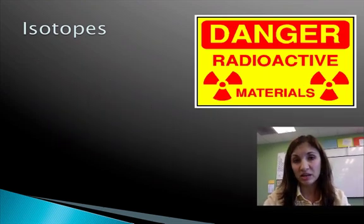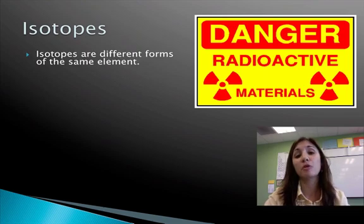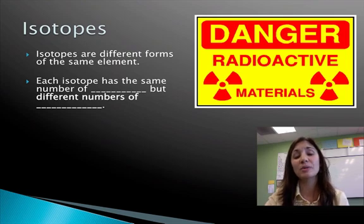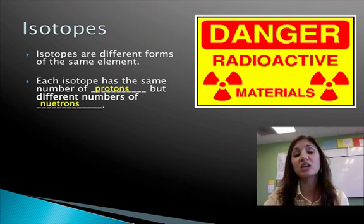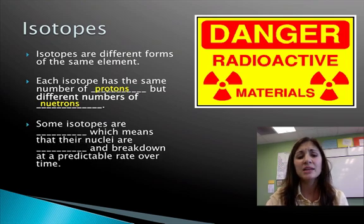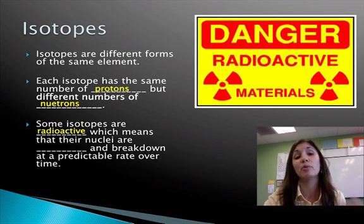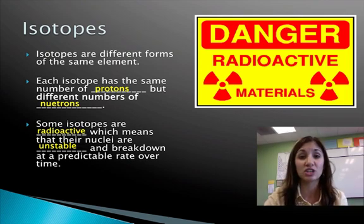Now, remember we said protons are forever? Neutrons and electrons, not so much. An isotope is a different form of the same element. And isotopes have to do with neutrons. So if I say isotope, you should say neutrons. Each isotope has the same number of protons, because protons are forever, but different numbers of neutrons. Some isotopes are radioactive. And if you're radioactive, these isotopes are unstable, which means that their nucleus is going to break down at a very particular rate, and it gives off various neutrons over time.